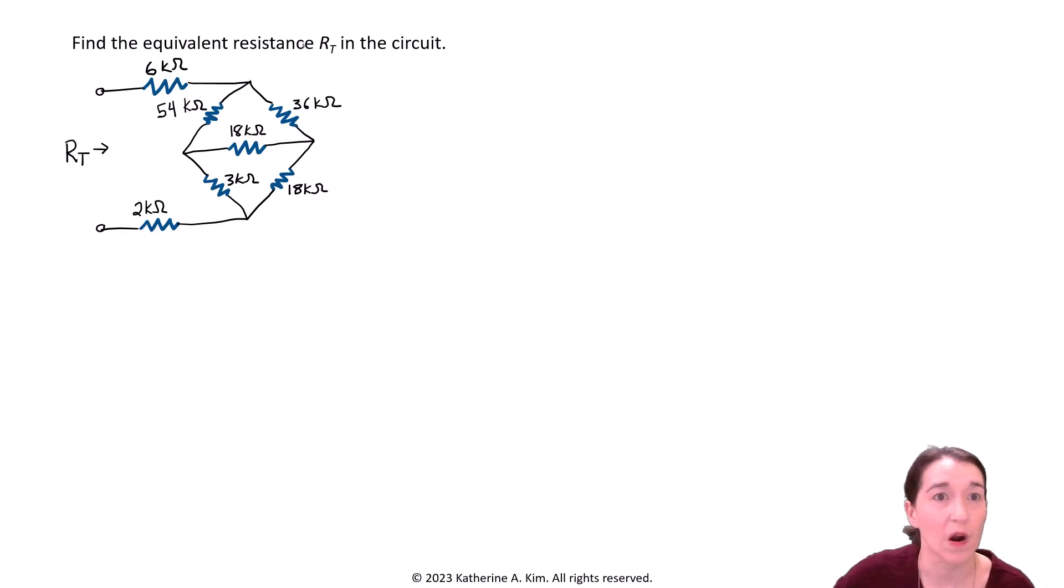Find the equivalent resistance RT in the circuit. When we look at our circuit, we see here's our RT, so it's measured from this top node to this bottom node here. We have this resistor in series with this big triangle, double triangle diamond of resistors. So from looking at this, it's not easy. There's no direct series or parallel connections, like we can't add these easily.